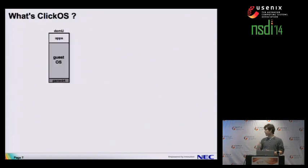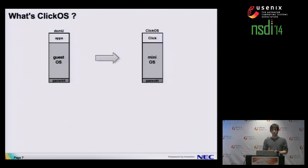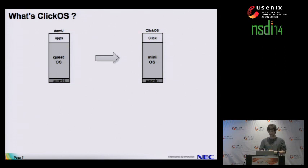So what is ClickOS? Under Xen, normally VMs are composed with a paravirtualization layer, which communicates with the hypervisor to program page tables, CPU timers, scheduling, and so on. On top of that you have your standard Linux kernel or NetBSD kernel and applications running on top. With ClickOS, we remove all of the clutter from the conventional operating system and just use MiniOS. MiniOS is a single address space operating system with no preemptive scheduler, so the application needs to cooperate with the kernel. It runs on a single core only and runs a single application — Click modular routers. So in essence, it's a VM just to process packets.